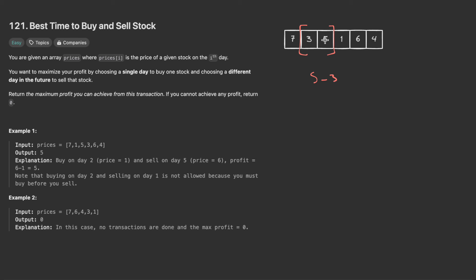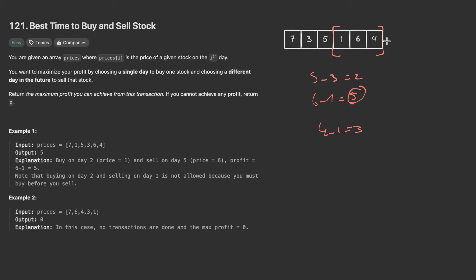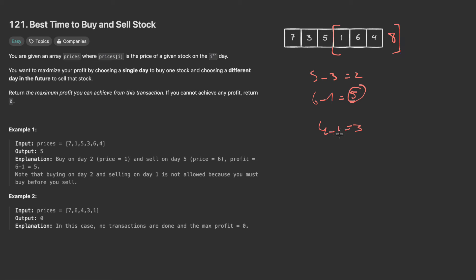If we buy at three and sell at five, we get a profit of two. Moving to the next element, one minus three = negative two, and since one is less than three, we move our window to buy at one. Then six minus one = five, which is the maximum so far. Continuing, four minus one = three, which is less than five. If we had eight, then eight minus one = seven and the maximum profit would be seven.